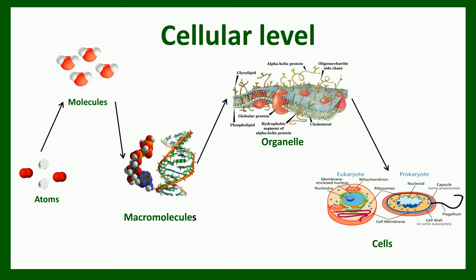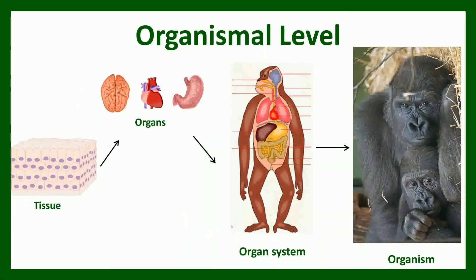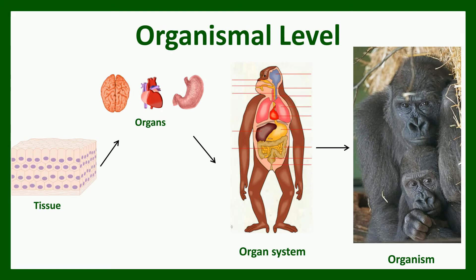The next level is the organismal level. Here you can see how organisms are formed. First are tissues, which are groups of similar cells that act as a functional unit. Tissues are grouped into organs — for example, the brain is an organ composed of nerve cells and a variety of associated tissues that form protective coverings. Organs are then grouped into organ systems, and all systems together form an organism.